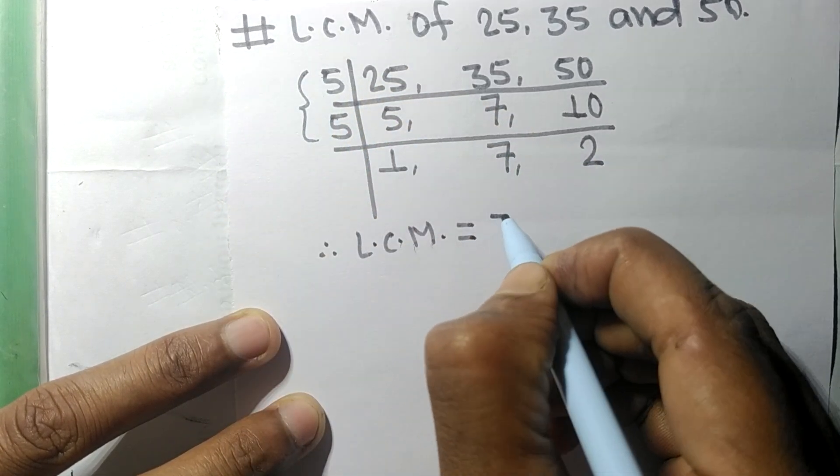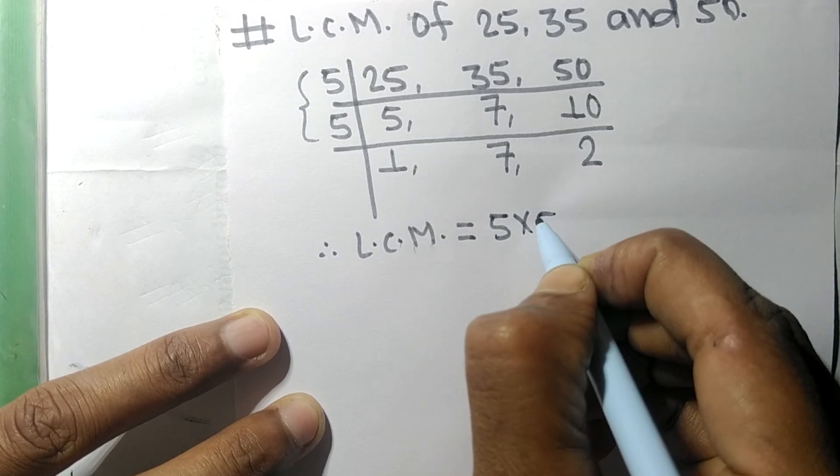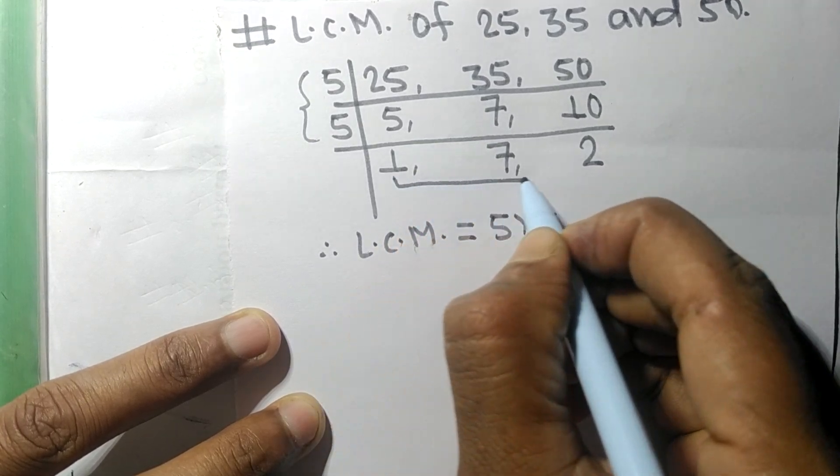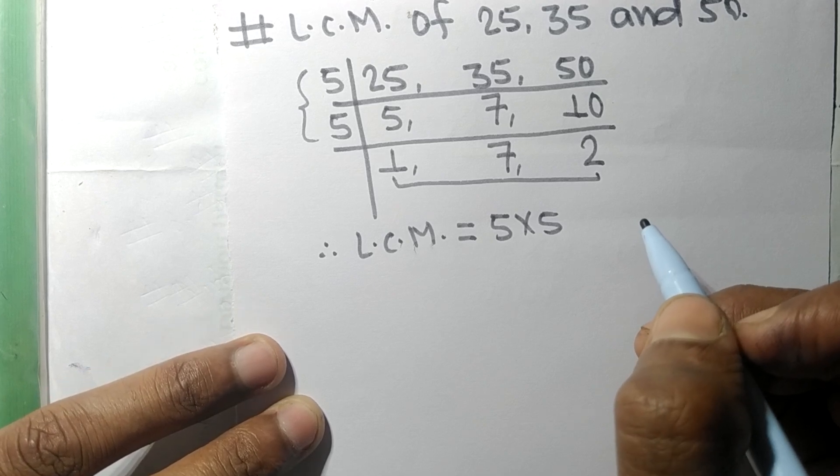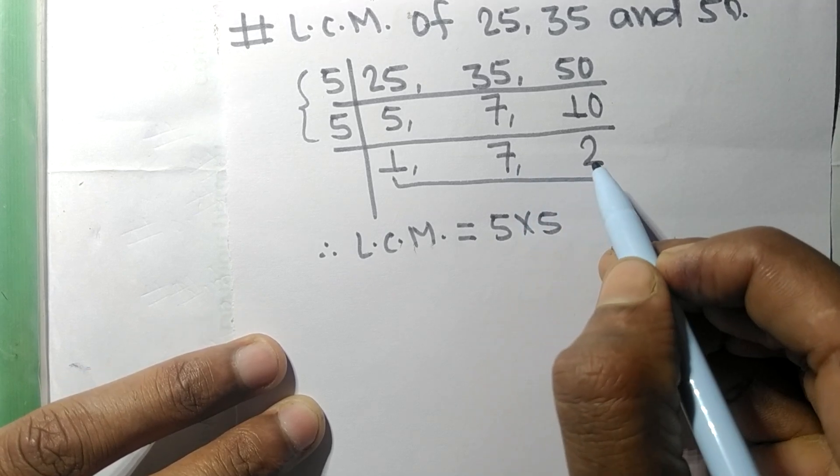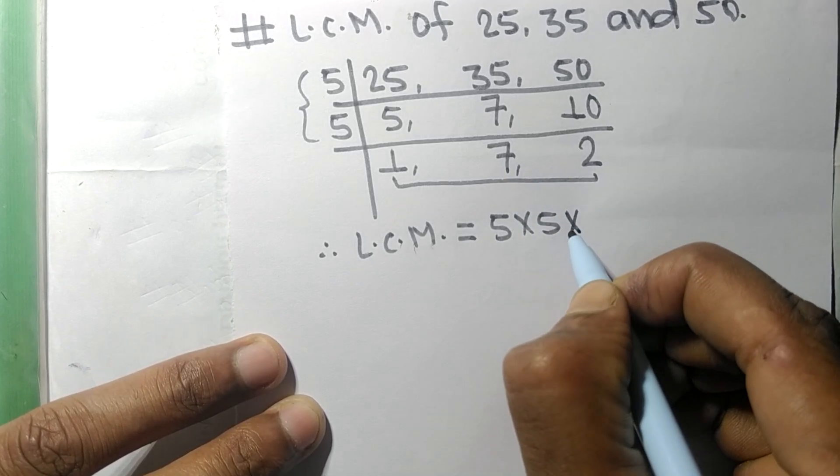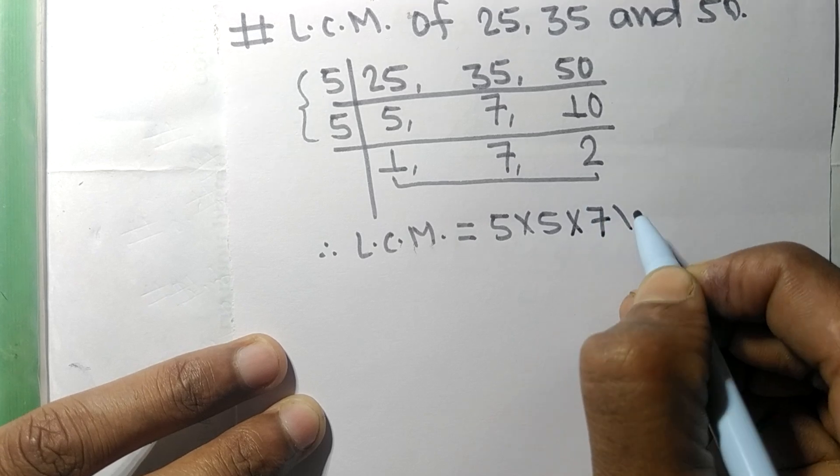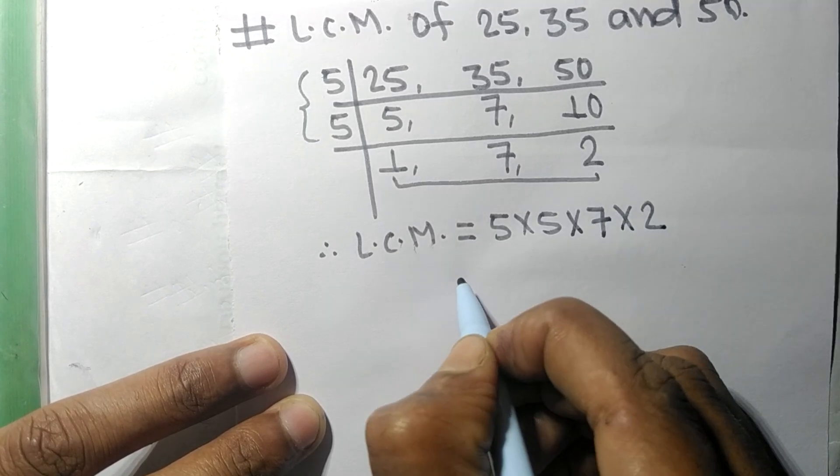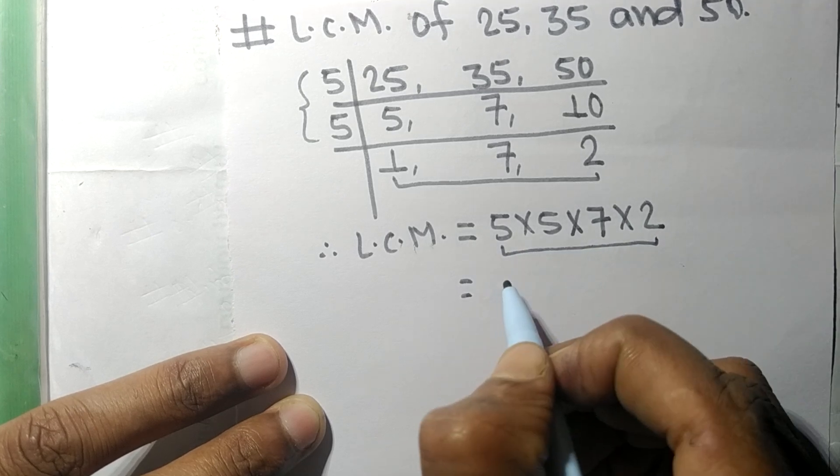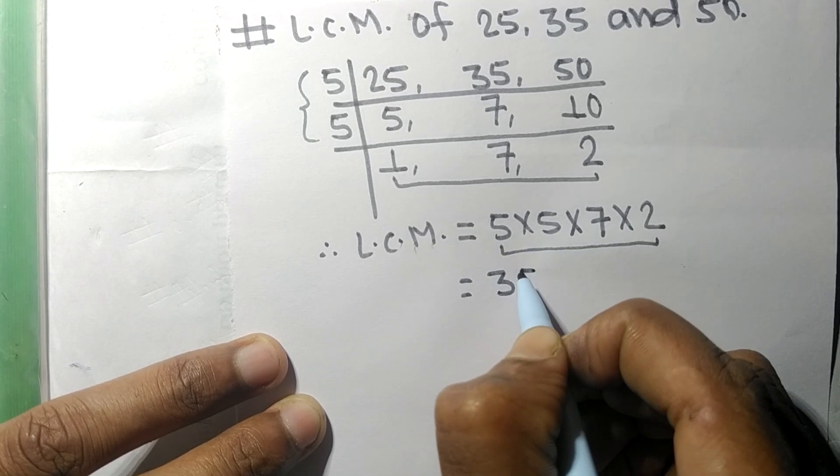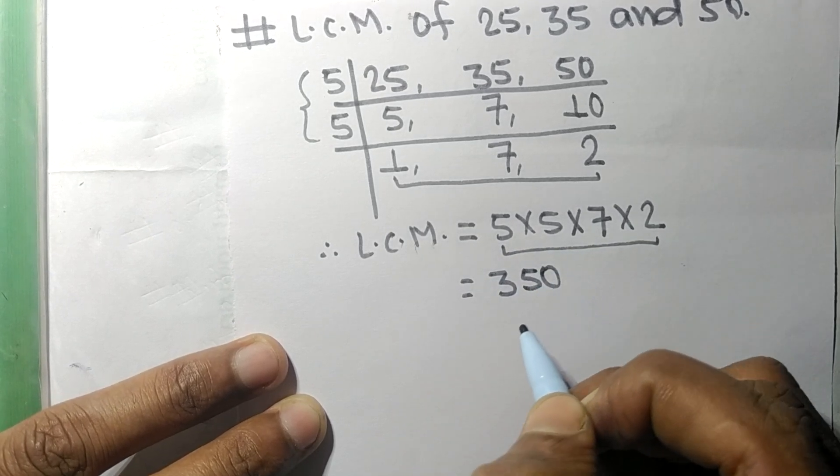From this side it is 5 times 5, and from this side we choose the numbers greater than 1, that is 7 and 2. So multiply by 7 and 2. So by multiplying all these numbers we get 350.